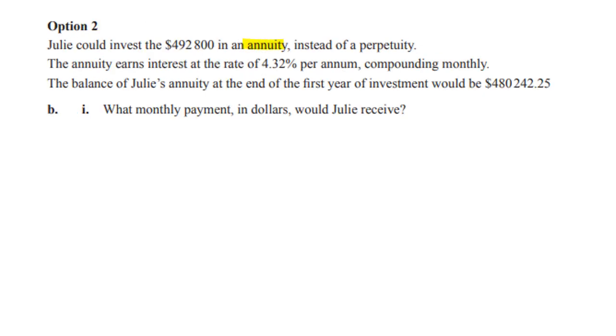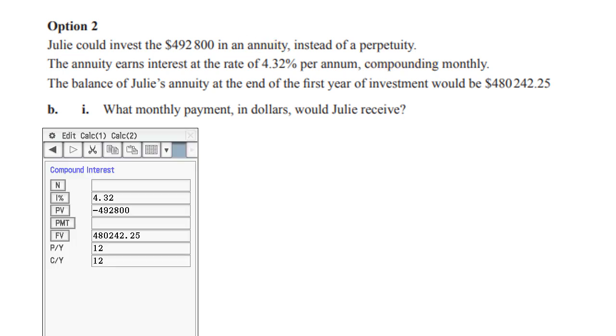We've gone to an annuity now and this looks like a job for the financial solver because it says compounding monthly immediately makes me think financial solver. So into our financial solver we take the interest rate and place it here. We take the value and place it here negative because we're putting the money into the bank.